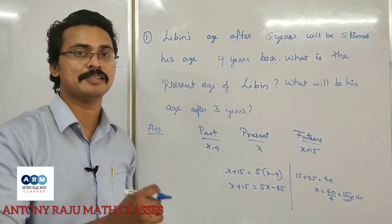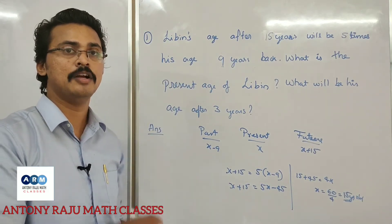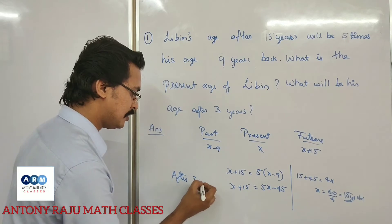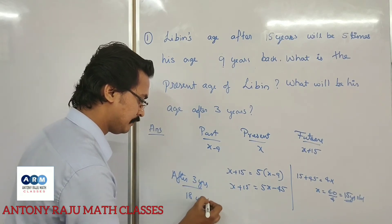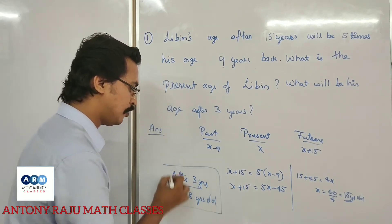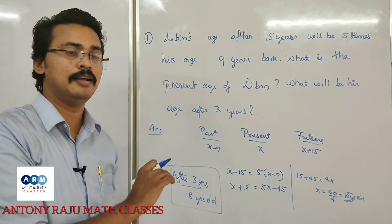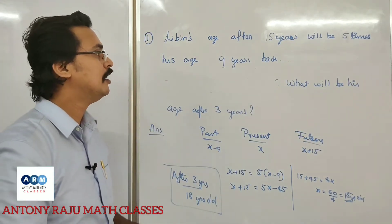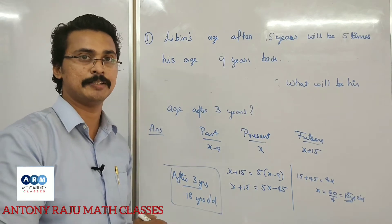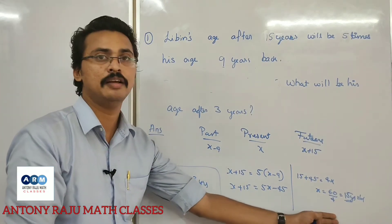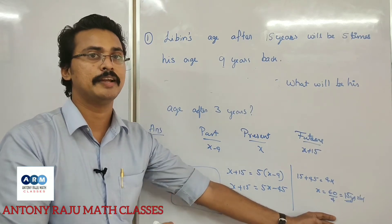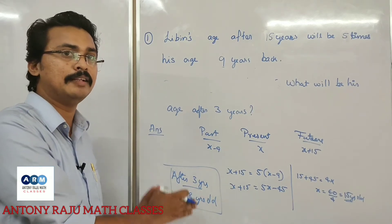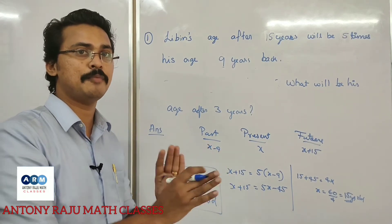Lippin's present age is 15 years old. After 3 years, his age will be 15 plus 3, which is 18 years old. That is the answer to the first question.